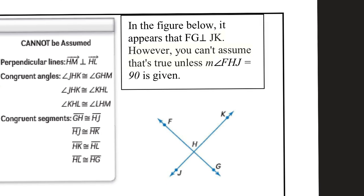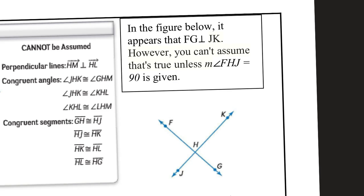So in this example, I have it saying in the figure below, it appears that FG is perpendicular to JK. All right. However, you can't assume that's true unless the measure of angle FHJ equals 90 degrees is given. So if you were to see a little right angle symbol somewhere like right here or here or here or here, if any of those are given, then you sure you can assume that these lines are perpendicular. But since no angle measure is given, you cannot assume that these are perpendicular lines.